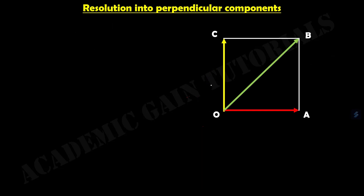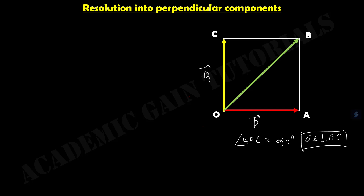Now, resolution into perpendicular components. In our previous case, the components were not perpendicular. But here, angle AOC equals 90 degrees, so OA is perpendicular to OC. In the denominator we write sine(alpha plus beta). Here, if beta and alpha together make alpha plus beta equal 90 degrees, then sine 90 degrees equals 1.